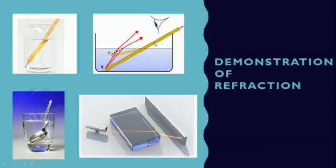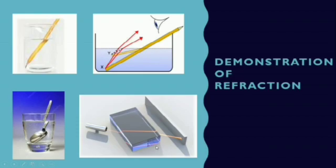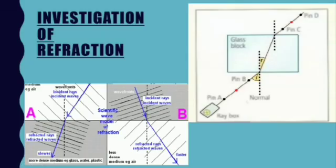Demonstrations of refraction include a pencil placed in water or a glass tank and a spoon in water, both of which appear bent due to refraction, showing that apparent depth differs from real depth. A laser beam incident at the boundary of a glass medium also demonstrates this: travelling from a rarer to a denser medium it bends towards the normal, and passing back from glass to air it bends away from the normal.